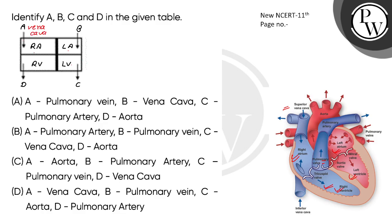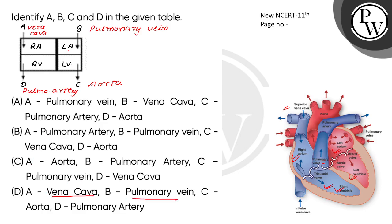So, vena cava goes to right atrium. The pulmonary artery carries blood to the lung for oxygenation. The pulmonary vein helps blood leave the lungs to reach the left atrium and left ventricle. For C, it is aorta. So: A is vena cava, B is pulmonary vein, C is aorta, D is pulmonary artery — option D is correct.